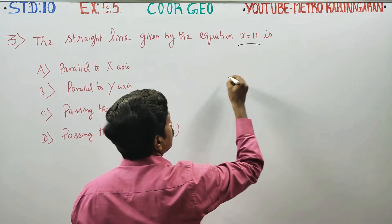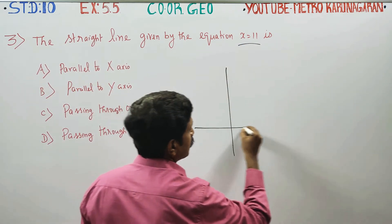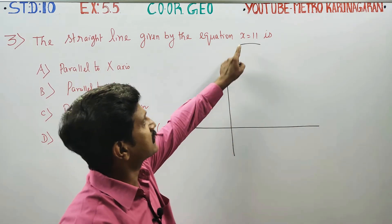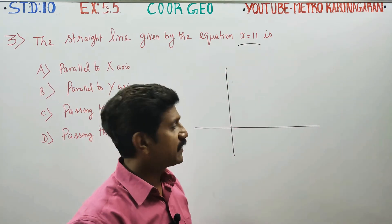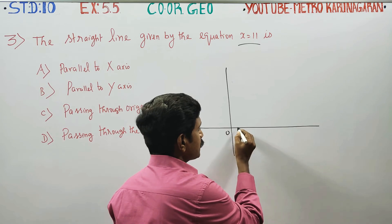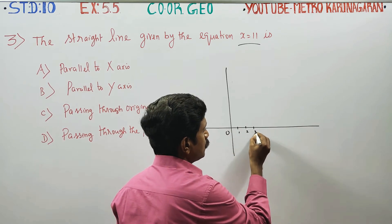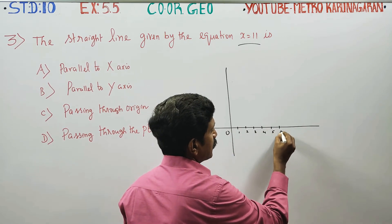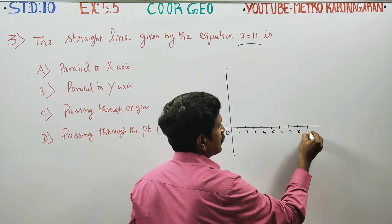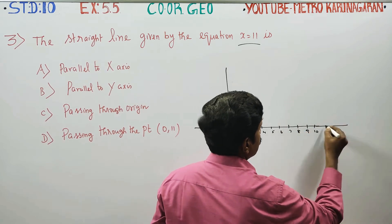X equals 11, in the line where I am going to tell you. This is 0, 1, 2, 3, 4, 5, 6, 7, 8, 9, 10, 11.